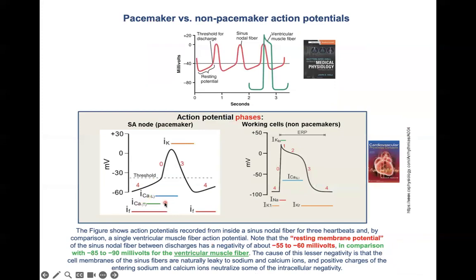By convention, the different phases of the action potential are numbered 4, 0, 1, 2, and 3. Phase 1 is missing in the SA node action potential. At hyperpolarization (phase 4), the funny channels are activated — not only funny channels are active here but also at least two types of calcium channels. This phase elevates the membrane potential to a threshold required for opening of calcium channels. Then phase 0 involves calcium influx, followed by phase 3 (repolarization), then phase 4 (hyperpolarization), which again reactivates the funny channels. This cycle repeats itself 70 times per minute.